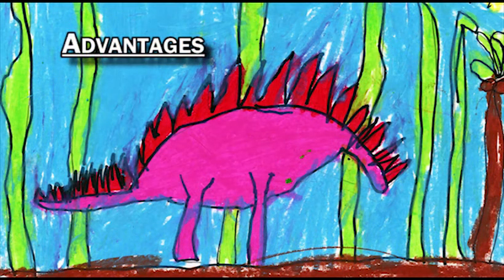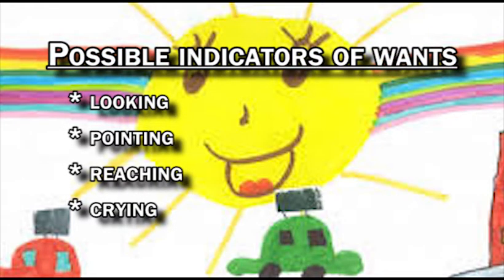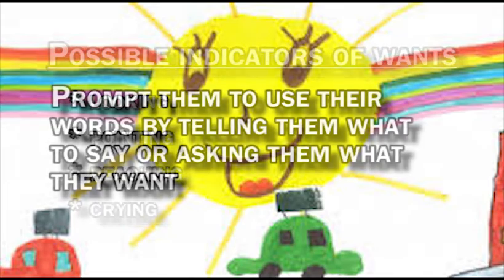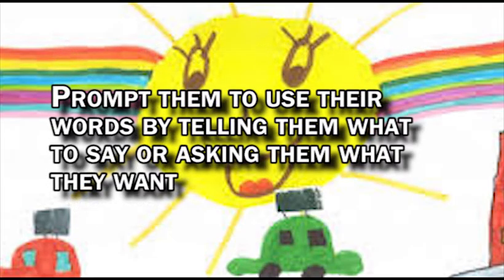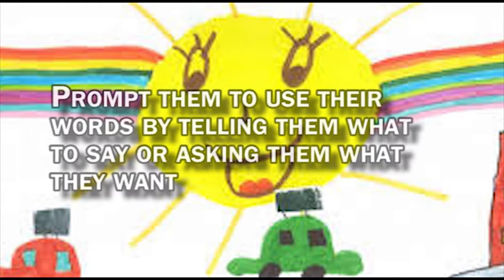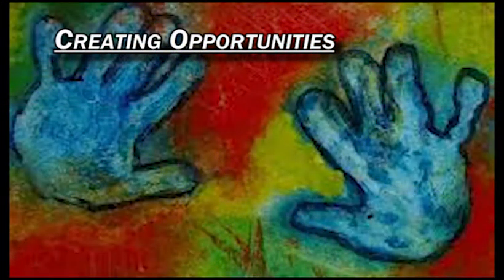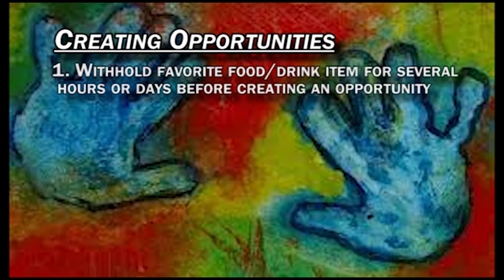There are multiple advantages of teaching children to vocalize their requests. If children do not ask for the things they want, they might cry or tantrum to get them. Teaching a more appropriate way of requesting may decrease problematic behavior. This may lead to more positive interactions because your child now has an easier way to access their wants and needs, and you and others will not have to guess what your child wants. By teaching your child to vocalize requests, you will promote independence by teaching them how to access their wants and needs in their natural environment.